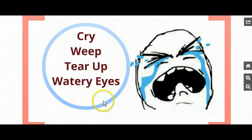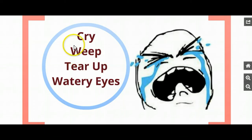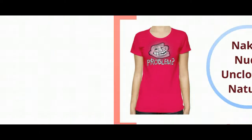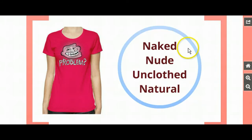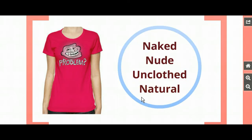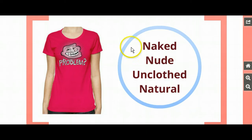Think about if you were crying, weeping, tearing up, or your eyes were watery — which one would you want to use to explain what you were doing? Let's try another one. Look at these four words and decide which is the most positive and which is the most negative: naked, nude, unclothed, natural. Probably the one with the least offensive connotation is 'natural' — and maybe also 'unclothed.' When we get to 'nude' that's a little more charged, and 'naked' is the most abrasive or harsh of the group.